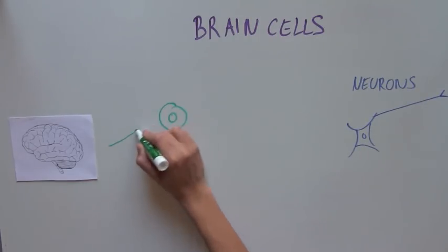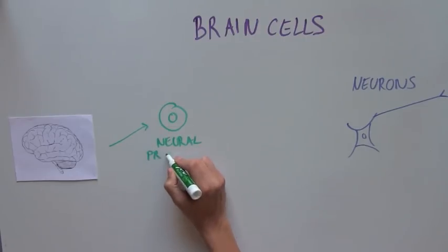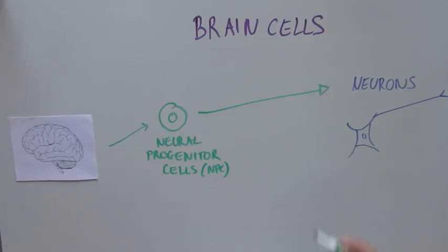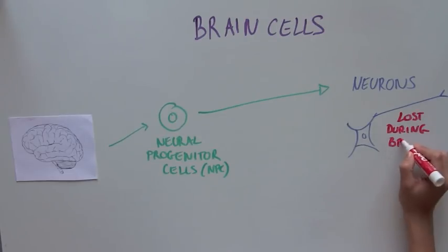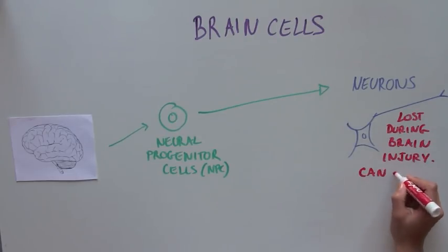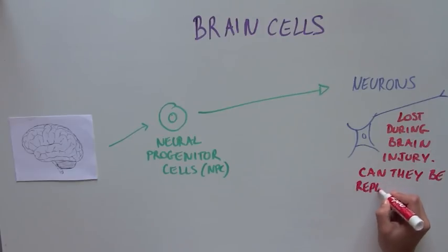Neurons in our brain come from specialized cells that resemble stem cells that we call neural progenitor cells, or NPC. It was initially thought that neurons could not be replenished in case of injury, such as a stroke or brain trauma.